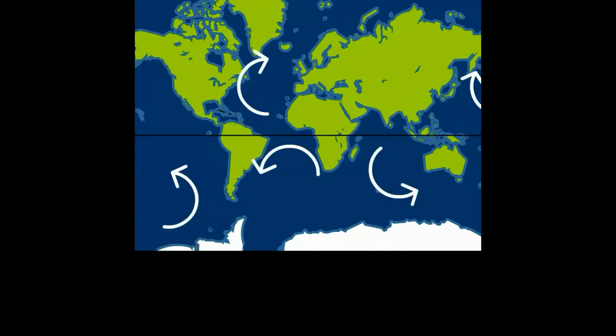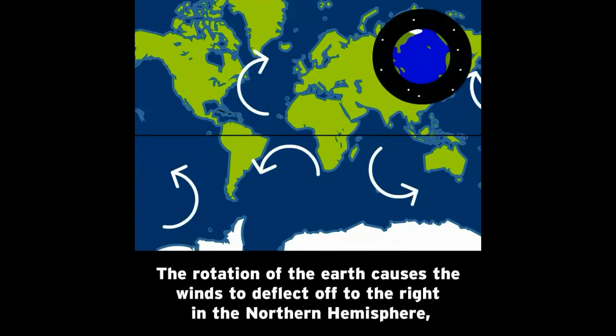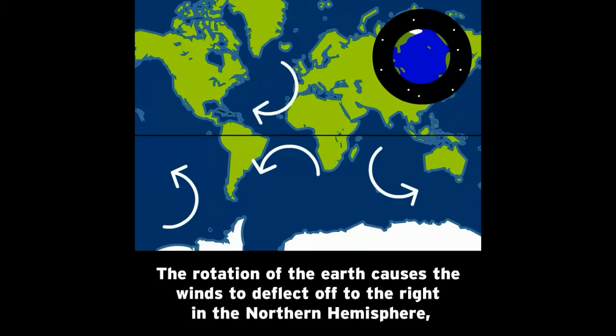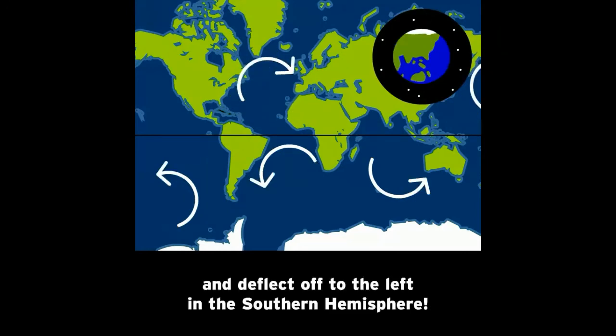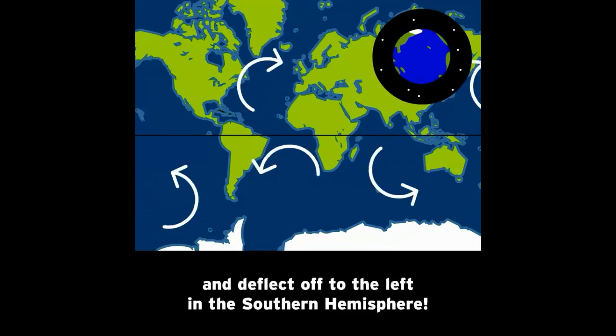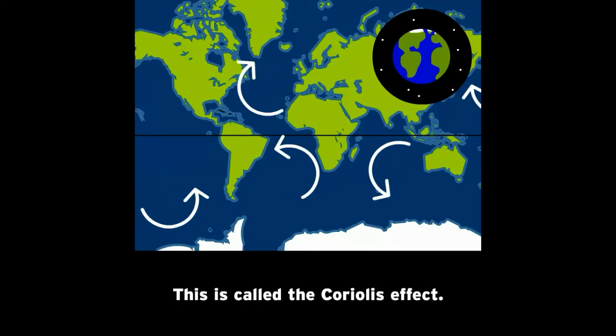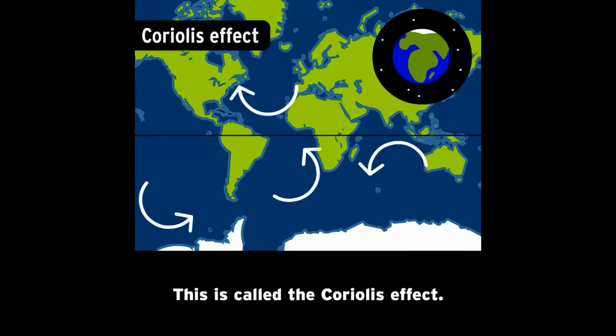The rotation of the Earth causes the winds to deflect off to the right in the northern hemisphere and deflect off to the left in the southern hemisphere. This is called the Coriolis effect.